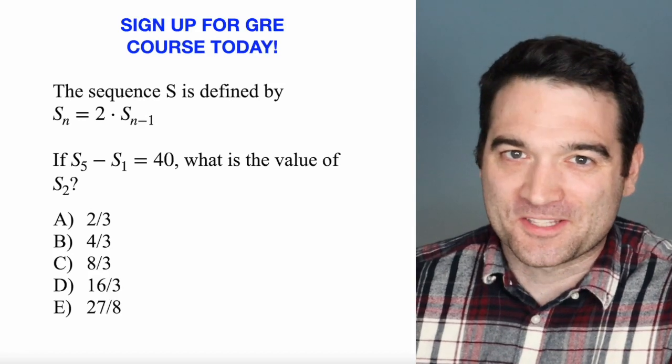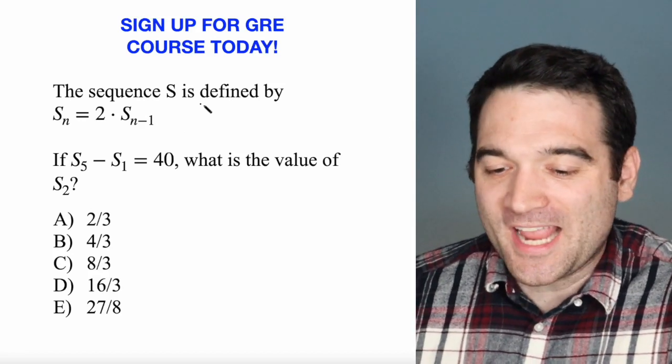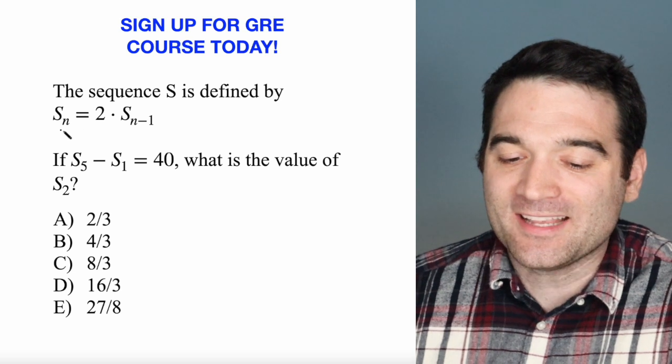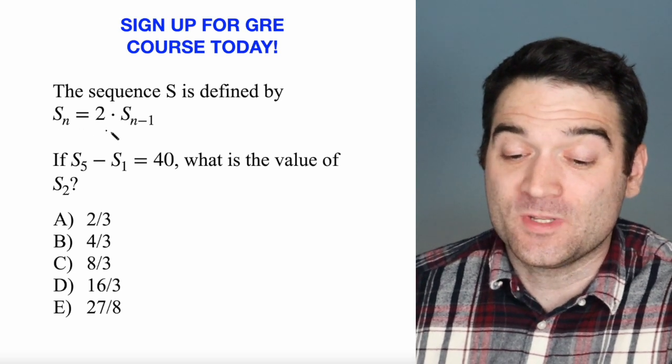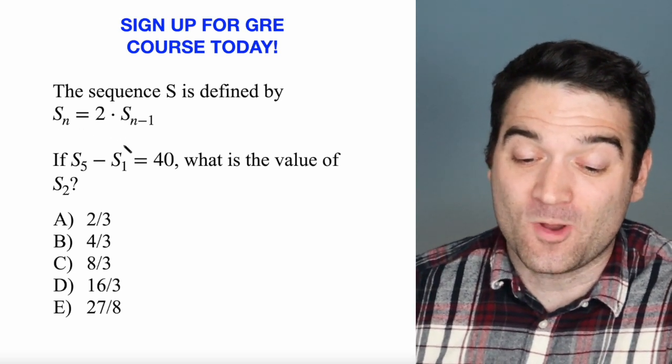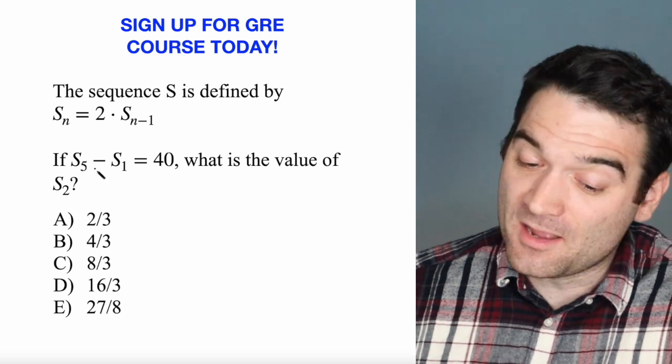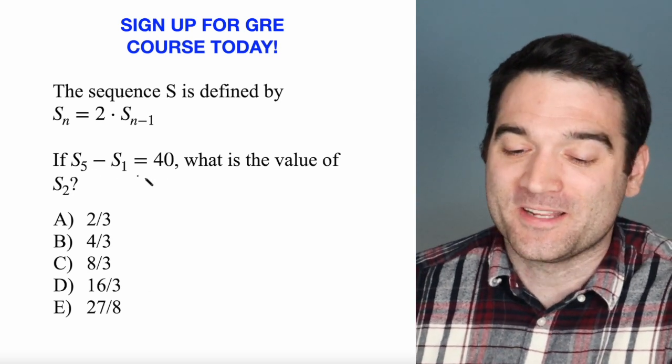Here's a GRE algebra question. Let's take a look. The sequence S is defined by S sub n is equal to 2 times S sub n minus 1. If S sub 5 minus S sub 1 is equal to 40,